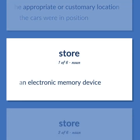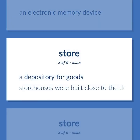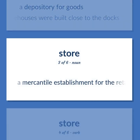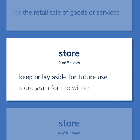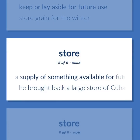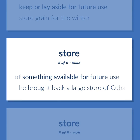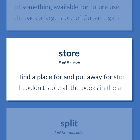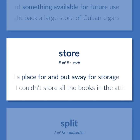Store. An electronic memory device. A depository for goods. Example: Storehouses were built close to the docks. A mercantile establishment for the retail sale of goods or services. Keep or lay aside for future use. Example: Store grain for the winter. A supply of something available for future use. Example: He brought back a large store of Cuban cigars. Find a place for and put away for storage. Example: I couldn't store all the books in the attic so I sold some.